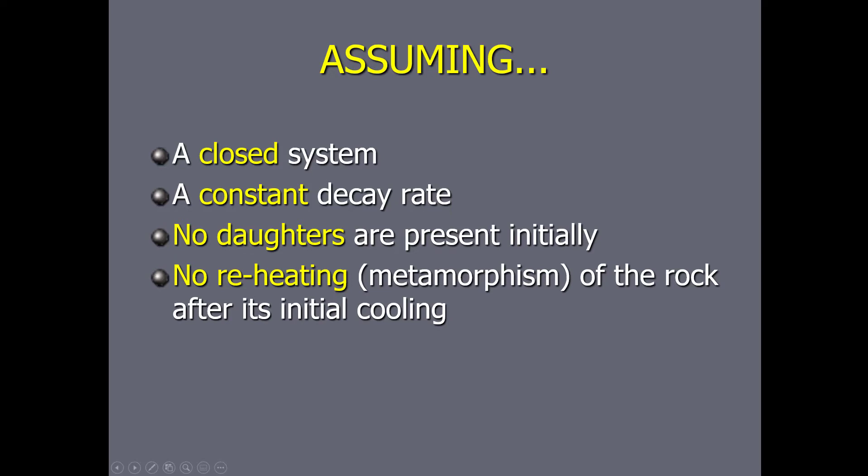The next assumption is that there has been no reheating or metamorphism of the mineral since its initial cooling. You actually can do isotopic dating of a metamorphic rock, but what you'll end up with is the date of metamorphism, not the date the mineral originally formed. In this class, we're going to be looking at one-step decays where parents turn right into daughters — strictly igneous rocks.